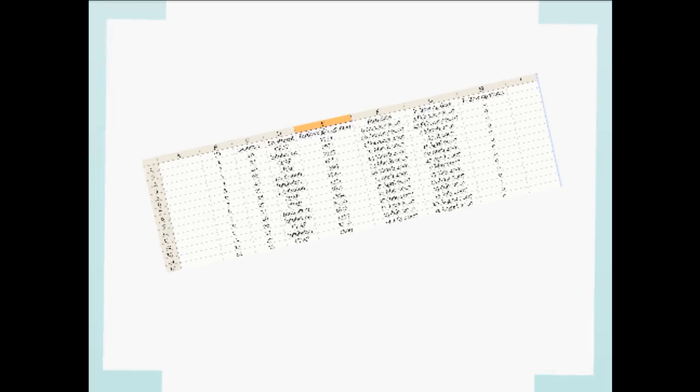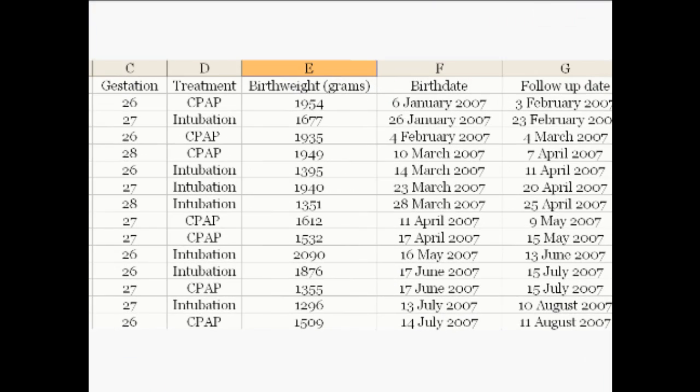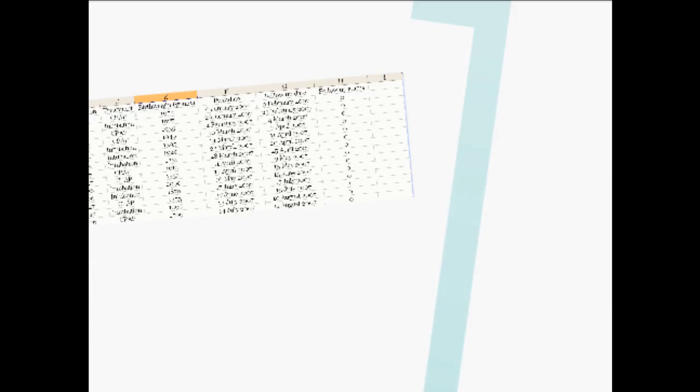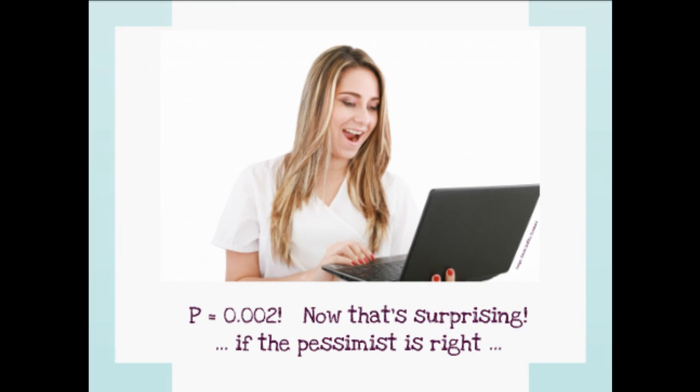Once the data are collected, a p-value is calculated using a statistical model. We can think of the p-value as a potential challenge to the pessimist view of the world. A small p-value indicates that the data we have are somewhat surprising if the pessimist view of the world is correct.